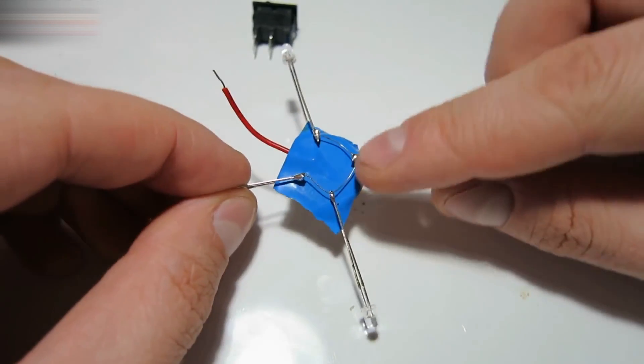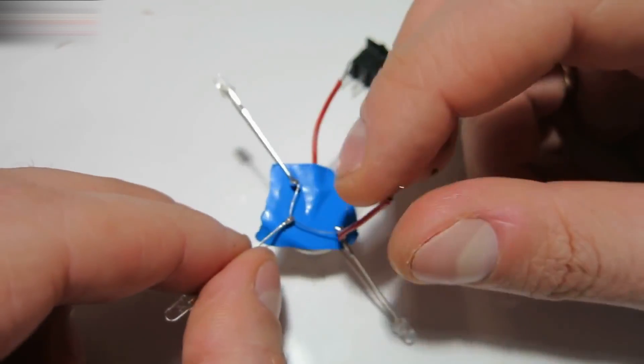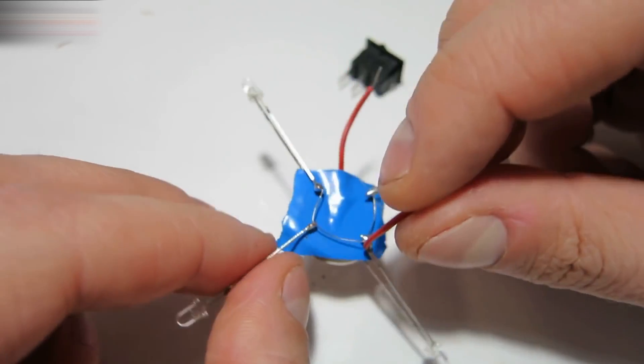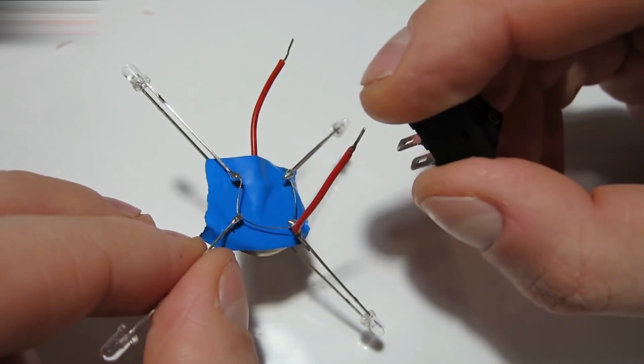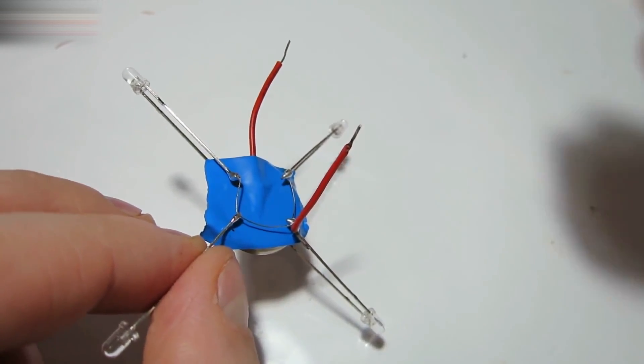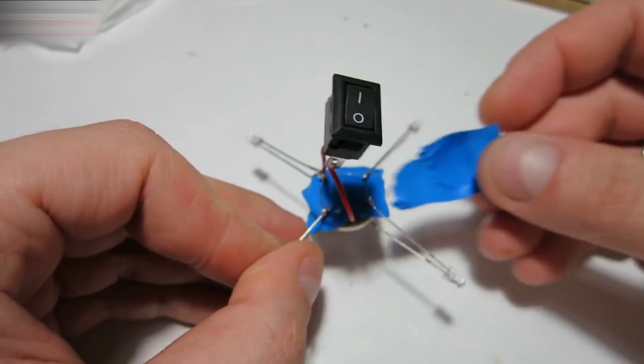Solder a thin wire to the LED cathodes, like this. Solder a wire like this red one to the negative connection, and then connect this wire to the switch. Put some more electrical tape on the negatives.